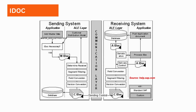Let's take an example. We have a sending system and a receiving system, where the sending system is trying to send master data to the receiver. As a prerequisite, we must first configure ALE in the sender system and ALE in the receiving system. This layer acts as a communication medium between the two systems and takes care of routing the message from sender to receiver, as well as state management and monitoring of the IDOCs.